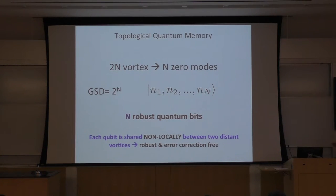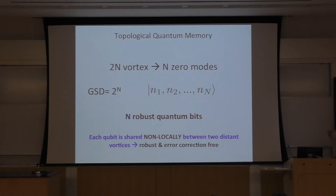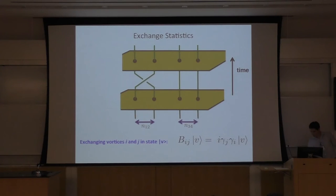But how about the exchange statistics for four vortices? For four vortices we have more than one type of exchange. If we braid vortices I and J, it's like acting the operator i·gamma_J·gamma_I on that state. For exchanging one and two, or three and four, the operation is diagonal in our basis, so the state just picks a non-trivial phase. But if I exchange two and three, I have to multiply by i·gamma₃·gamma₂, which is not diagonal in this basis.